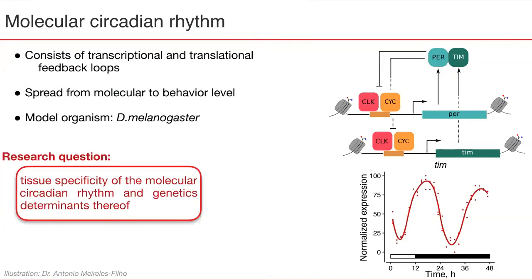We chose Drosophila melanogaster as an organism of study due to its simplicity of maintenance. It is also cheap and has no ethical concerns attached. In this presentation, I would like to shed light on the shortcut to experimental design of large-scale population genetic studies of molecular circadian rhythm.